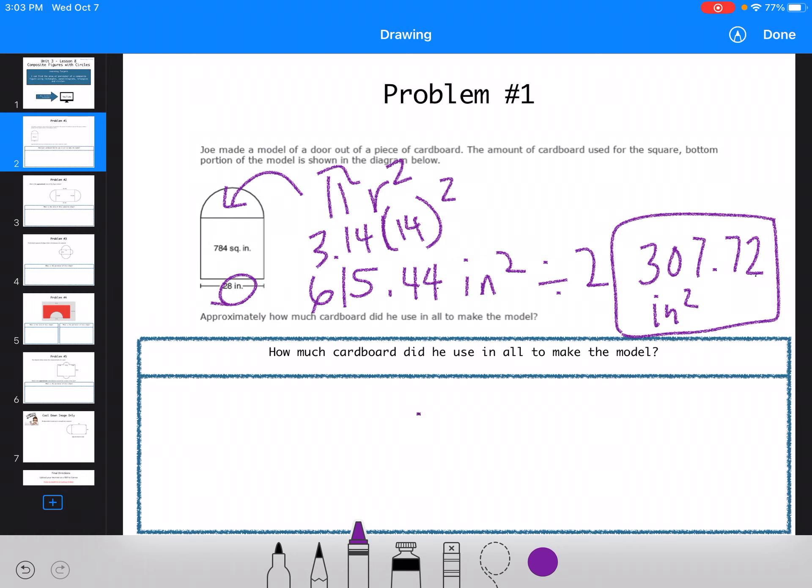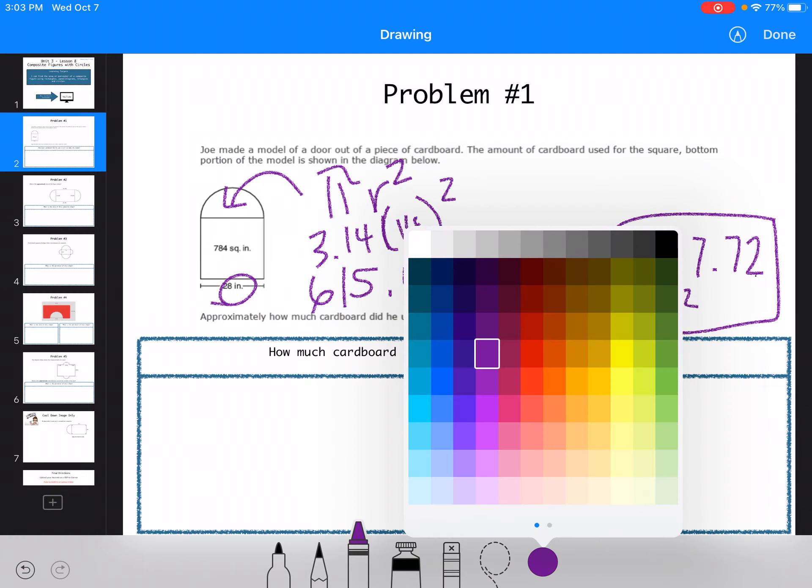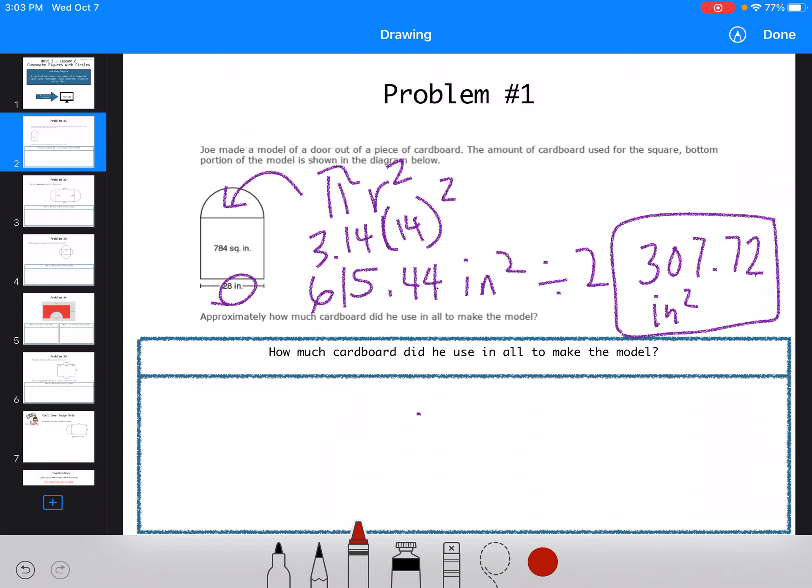But that isn't the whole shape of the door. That's not what they were asking for. They want to know what the whole door is. So I take 784 and I'm going to add it to my 307.72 and I get a total of 1,091.72 inches squared. That's how much cardboard he used or the area of the cardboard he used.